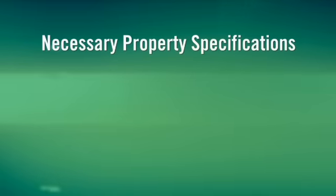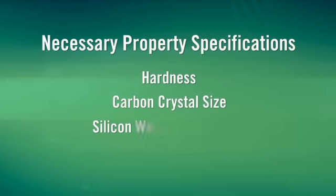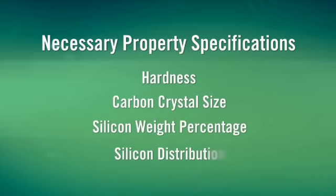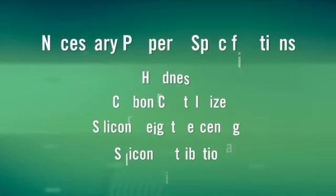Each of the necessary material properties—hardness, carbon crystal size, silicon weight percentage, and silicon distribution—must meet strict specifications. If they don't meet any one of these requirements, the entire coating lot will not proceed to the next major manufacturing step and will be destroyed.